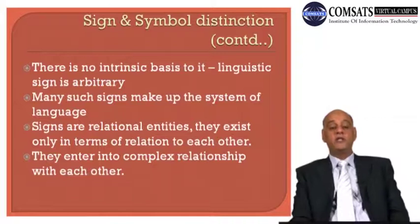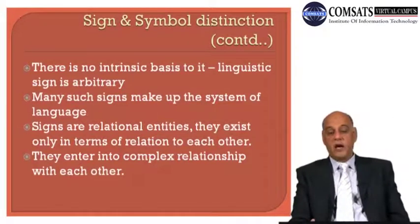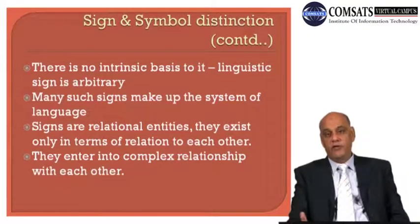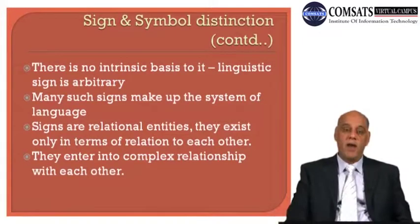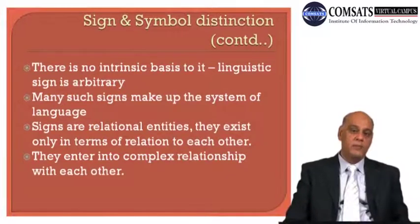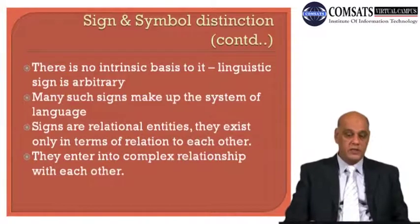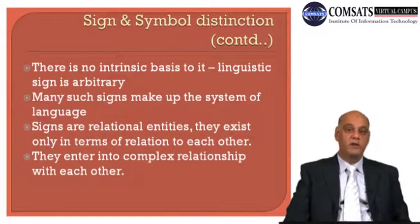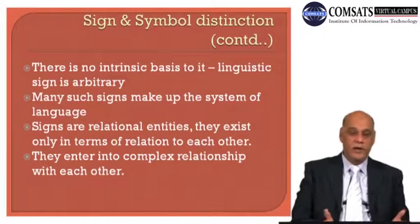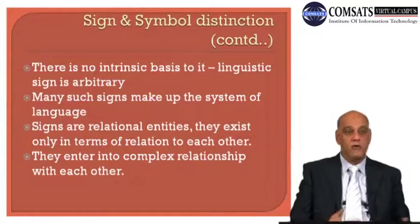Moving on, there is no intrinsic basis to it — linguistic sign is just arbitrary. Many such signs make up the system of language. Likewise, the way we have the word 'tree' for that object, for every object we have words. When these signs combine, they make the system of language. Language is formed from signs — signs which represent concepts are assigned to objects, and that combination makes up the system of language.